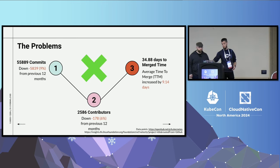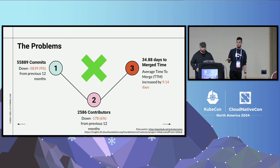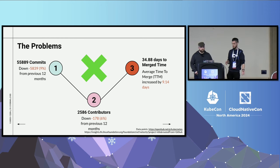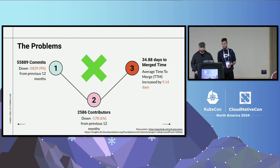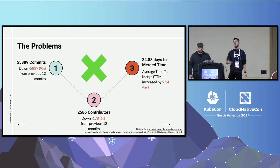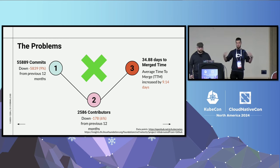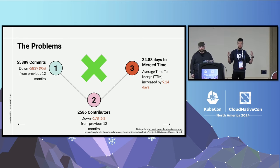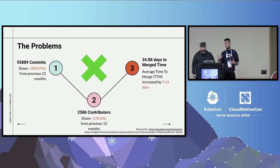We are facing problems within the Kubernetes project, and not many people talk about problems. In the last 12 months, we are down 9% in commits. We are down 6% in active contributors actually committing. We also need nine more days to go from opening a PR to merging a PR, which slows everything down. It's a huge project and it's really hard to onboard people.